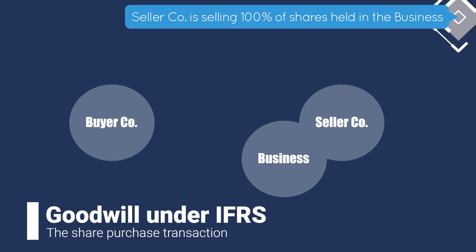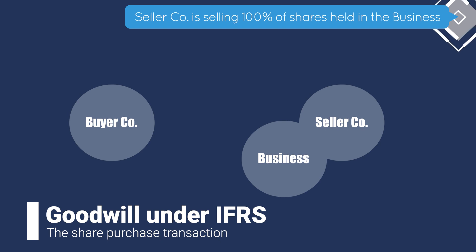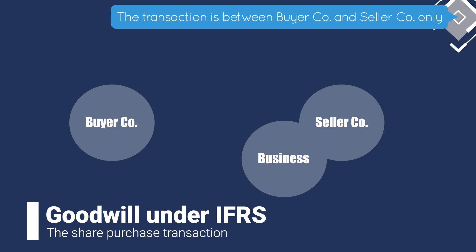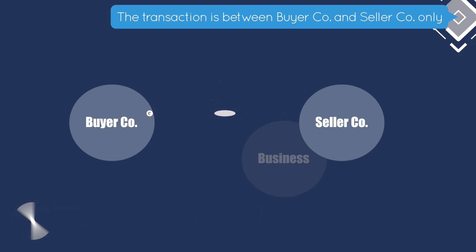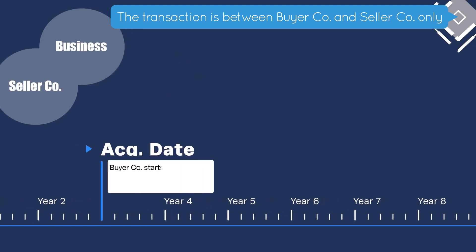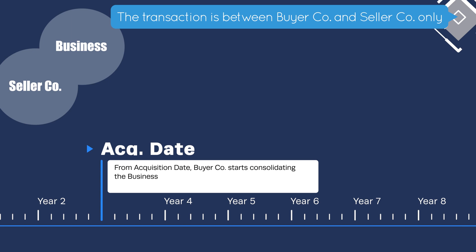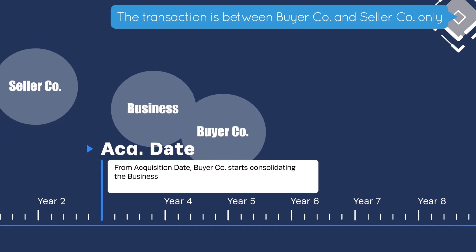In this situation, the buyer acquired control of the business by buying the shares held by the seller. This is effectively a shareholder transaction just between the buyer and the seller, and the business is normally not impacted from an accounting standpoint. Before the sale, the seller consolidates the business in its books, and after the sale, since there is a transfer of control or ownership, the buyer will be required to consolidate the business from the date of acquisition.